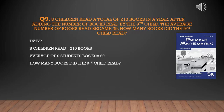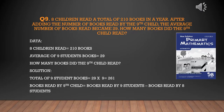It means all nine students averagely read 29 books — for example, the first read 29, the second read 29, the third read 29, and so on. The question is: how many books did the ninth child read?